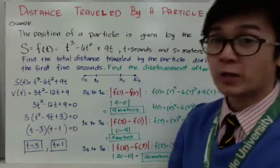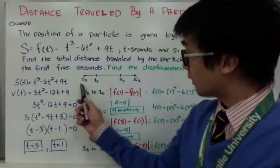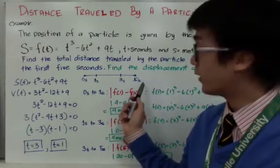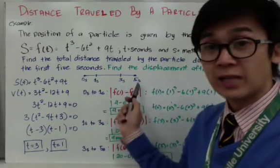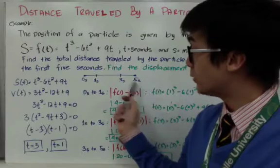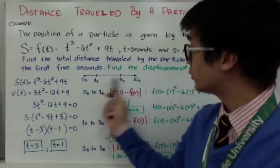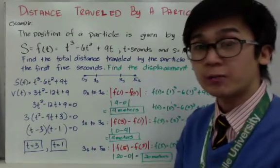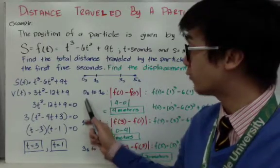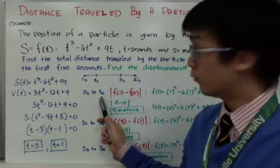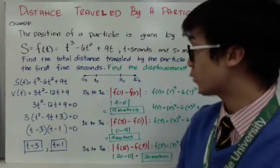Going back to the question about total distance traveled in the first five seconds, we identify three intervals using the critical values from the velocity function: from zero to one second, from one to three seconds, and from three to five seconds. We need to find the distance traveled in each of these intervals to answer the first question.